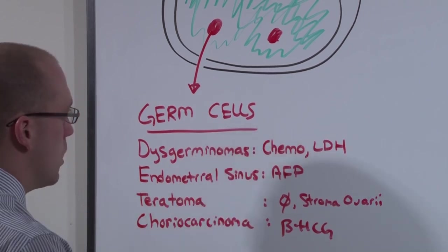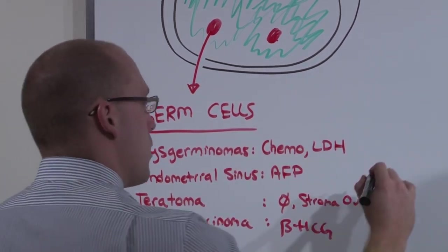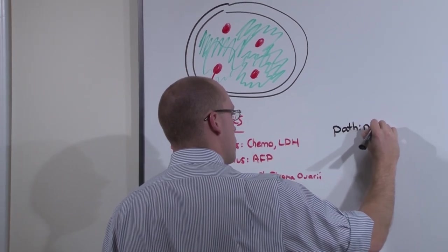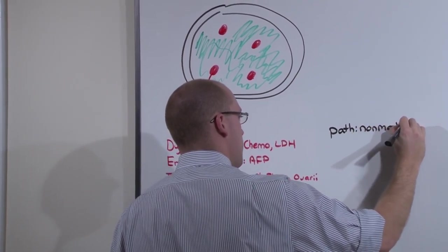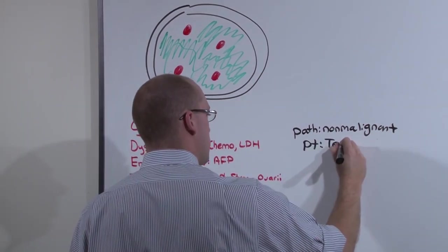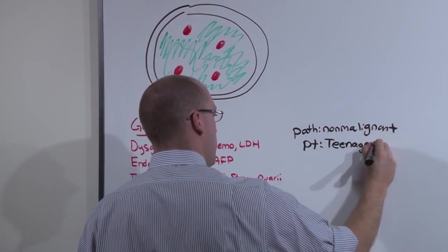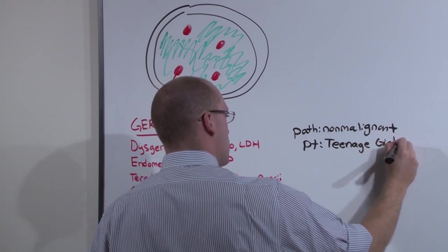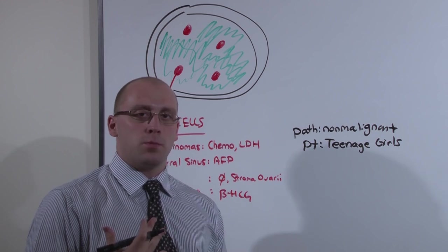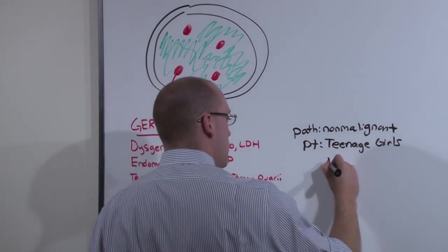Now, a germ cell tumor has a pathology that is non-malignant, and commonly occurs in teenage girls. Because they are non-malignant, these just get bigger and bigger. And so they are going to present as an adnexal mass.